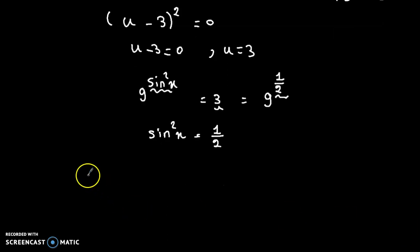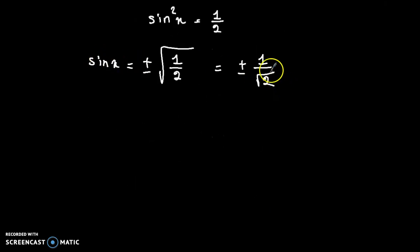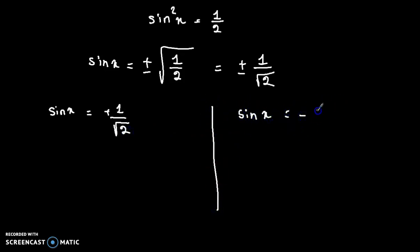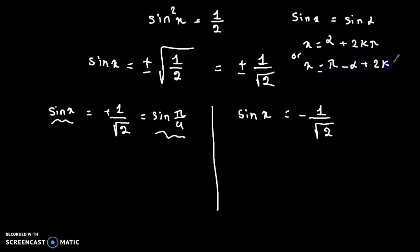Therefore sine x equals plus or minus 1 over radical 2. Now let's split these two solutions. For sine x equal to 1 over radical 2: 1 over radical 2 equals sine of pi over 4, so sine x equals sine of pi over 4. Note that if sine x equals sine alpha, then x equals alpha plus 2k pi, or x equals pi minus alpha plus 2k pi.